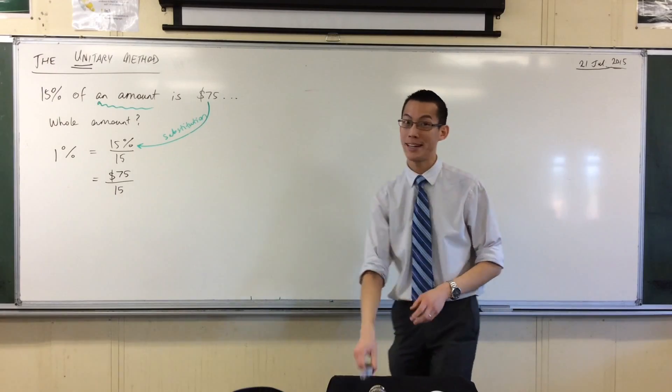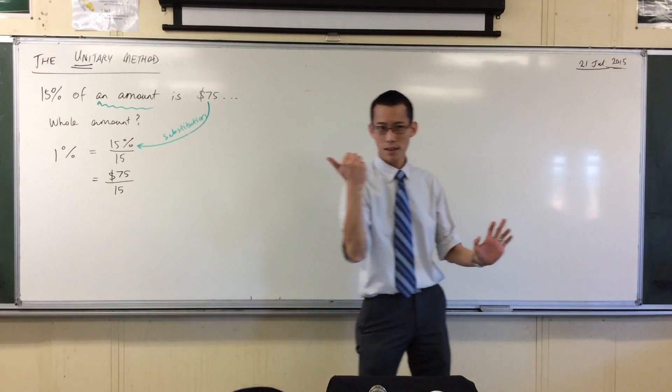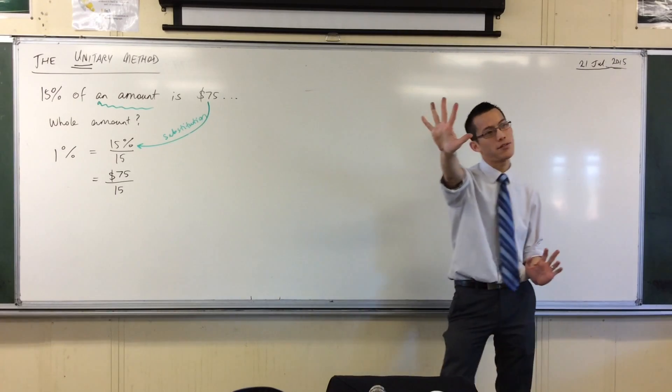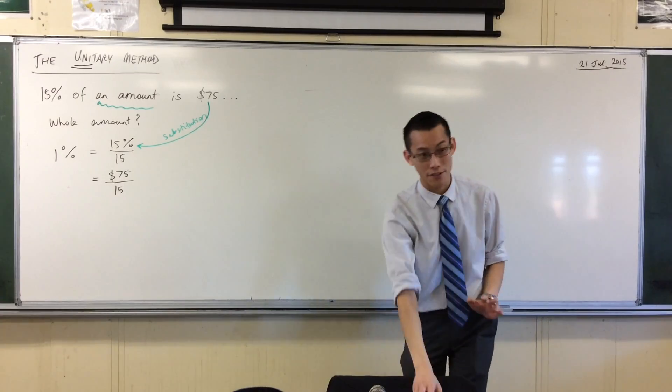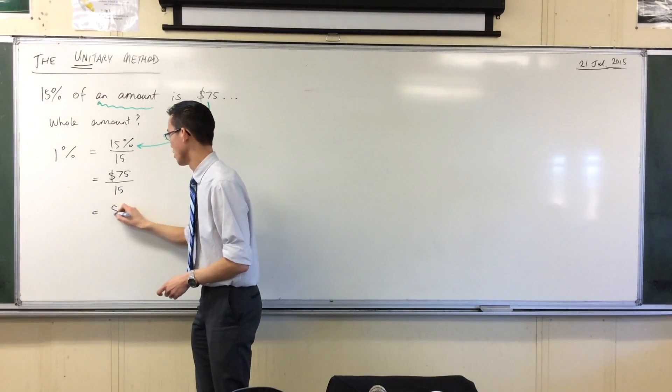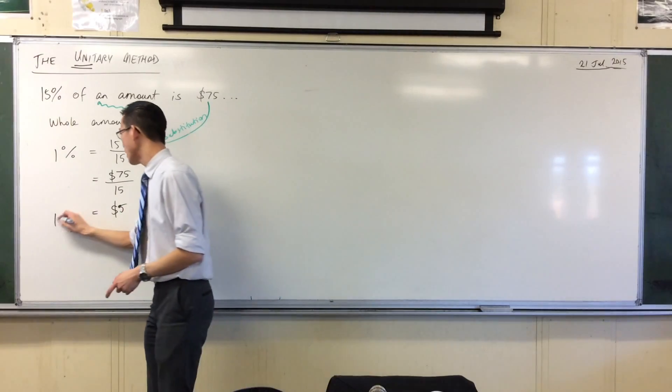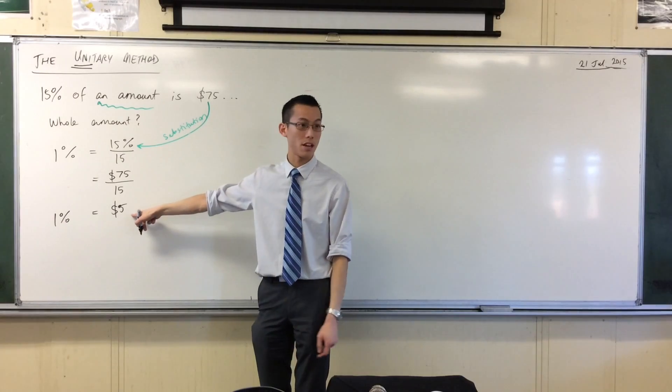$75 divided by 15. If you're really good with your times tables, let's give it a go. 15, 30, 45, 60, 75. So I can fit $5 out of that. That's how many I get out. So 1% of our whole amount is going to be $5.